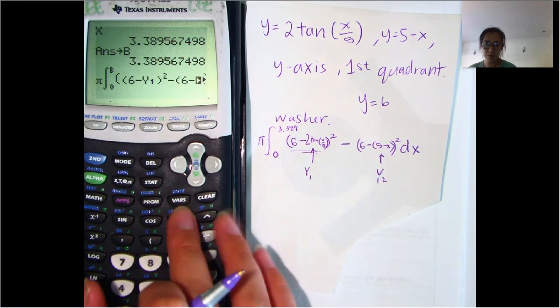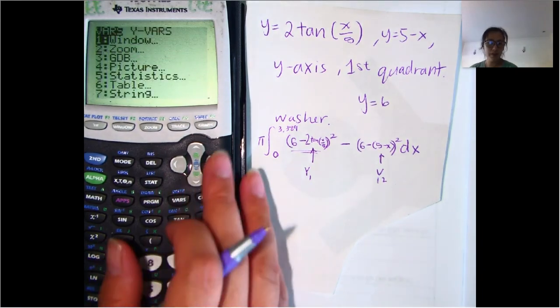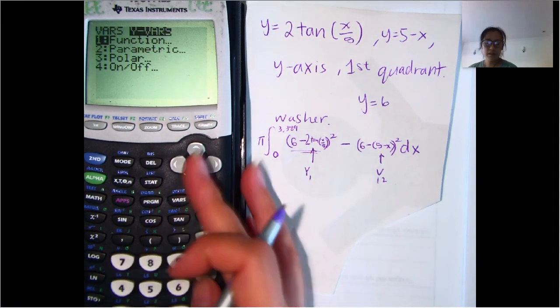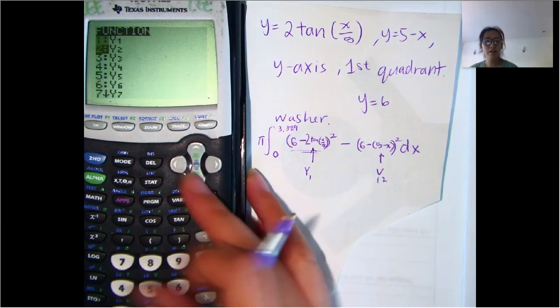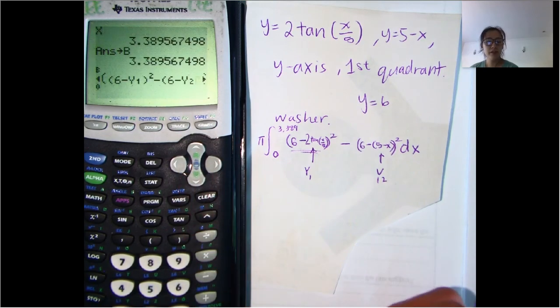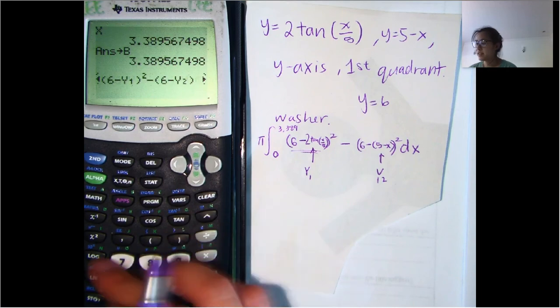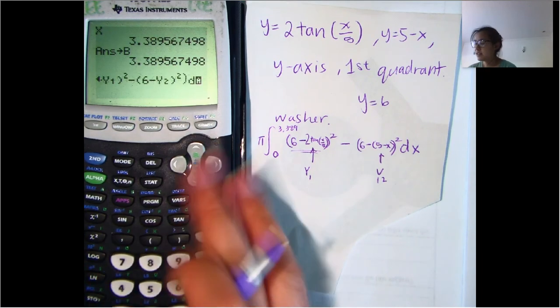so we go to variables, y variables, and then we go to y2. So 6 minus y2, and then close parentheses, squared, dx.